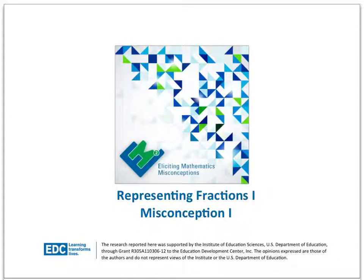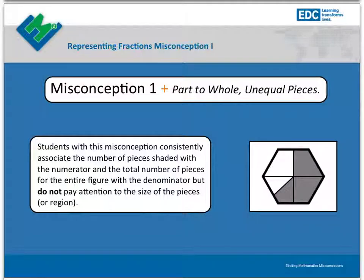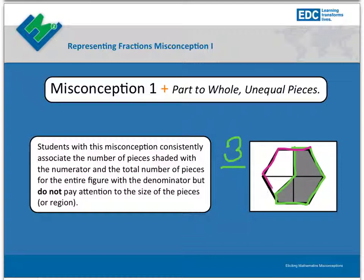Representing Fractions 1, Misconception 1. Students with Misconception 1 — part to whole, unequal pieces — consistently associate the number of shaded-in pieces in a figure and the total number of pieces with the denominator. However, they do not pay attention to the size of the pieces or the region.